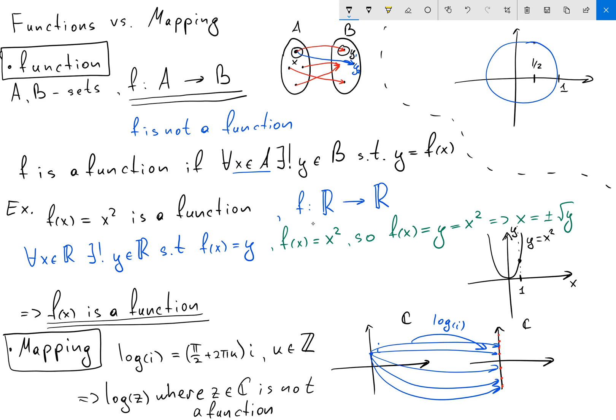assuming that we're given the unit circle, then for my element one half, I have two elements corresponding on my y-axis.